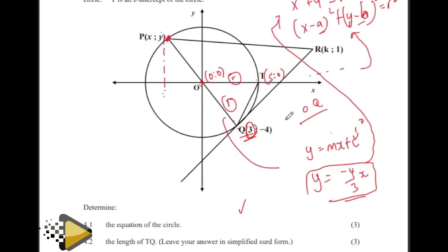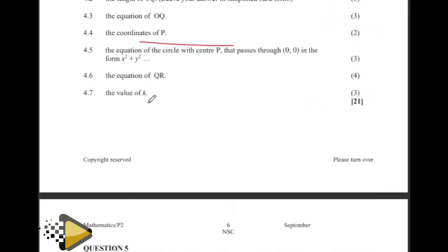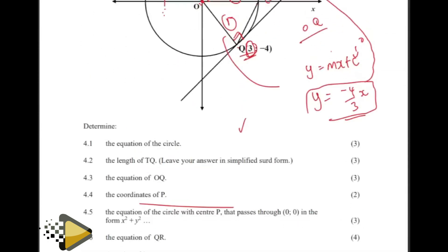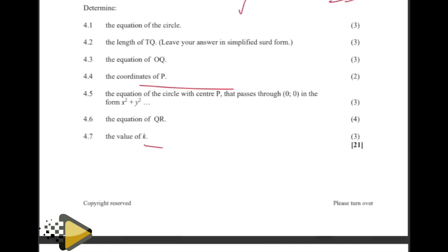Equation of QR. Remember, QR is a tangent. For tangents and lines from the center, they'll be perpendicular. Tangent and the diameter will be perpendicular. Since you have the equation of this, or you have the gradient of this, you can find the gradient of that and do that. That equation will also be used to help you find k. That is to do with analytical geometry.